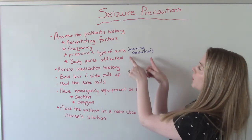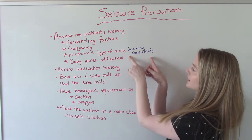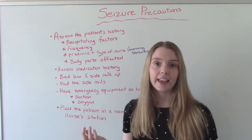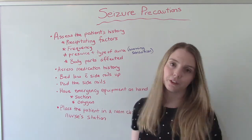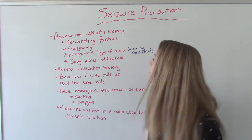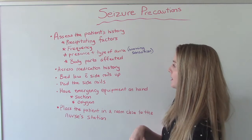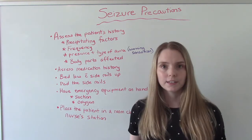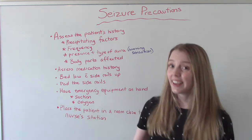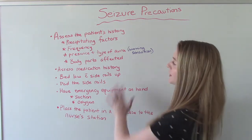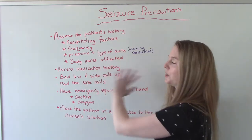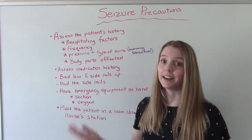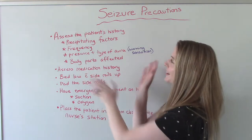As a refresher, an aura is a warning sensation. A lot of times people think an aura is a visual thing, and it can be — but it can involve any of your five senses. Then ask what body parts are affected. Is the whole entire body affected, or just the upper extremities? This is very individual. Some people will give you all this information in great detail, and some will say they have no idea. The more information we can get, the better.